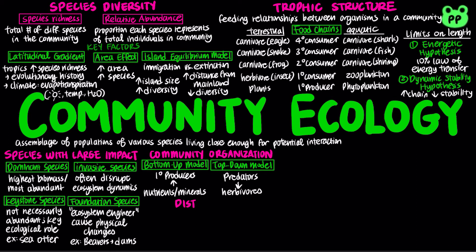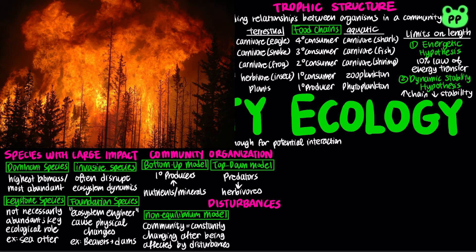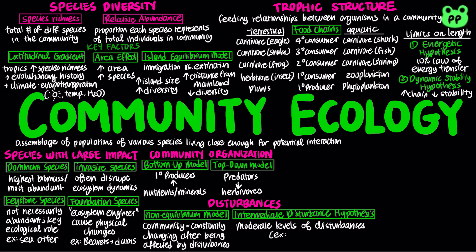A disturbance is an event that changes a community, removes organisms from it, and alters resource availability. The non-equilibrium model describes a community as constantly changing after disturbances. Fire is a significant large-scale disturbance in most terrestrial ecosystems and is often a necessity in some communities. The intermediate disturbance hypothesis suggests that moderate levels of disturbance can foster greater diversity than either high or low levels of disturbance.